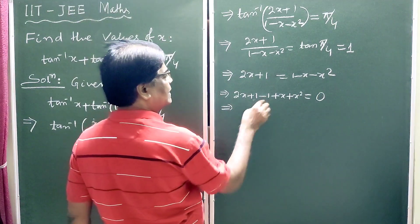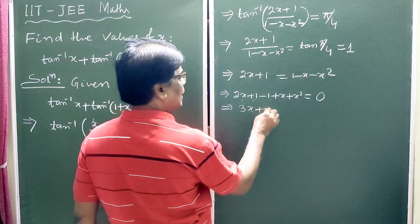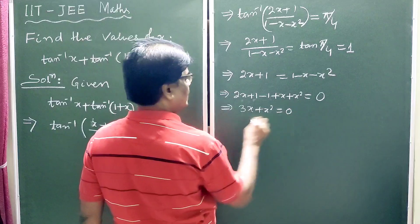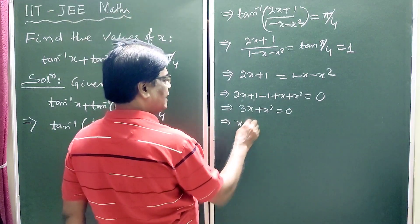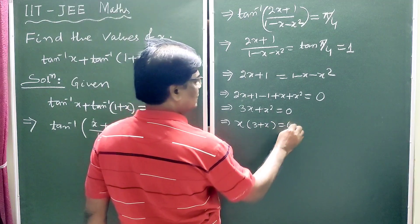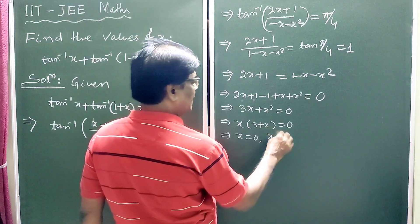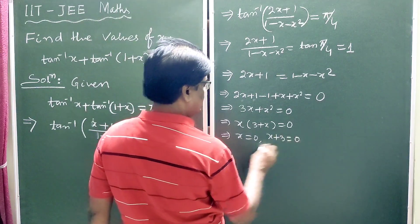So here 1 and 1 cancel, 2x plus x is equal to 3x plus x square is equal to 0. Now taking x common, 3 plus x is equal to 0, so 3x plus 3 is equal to 0.